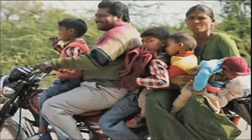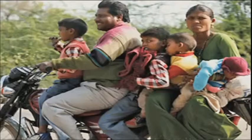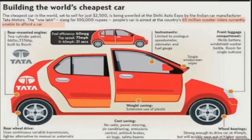Look at that picture — it's an actual picture, not posed for the camera. There are 65 million people who cannot afford a car in India and use a motor scooter to transport a family of five or six. Now take a two-thousand-dollar car — a motorcycle costs about a thousand to fifteen hundred dollars. Target that population with this two-thousand-dollar car, and you've just created 65 million buyers.